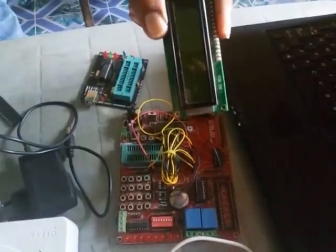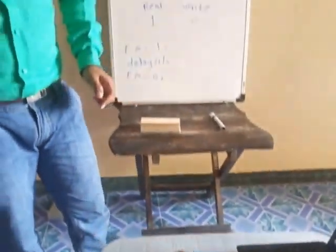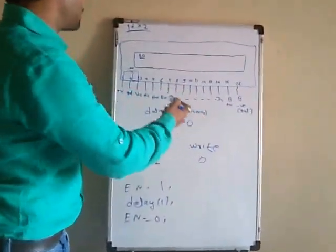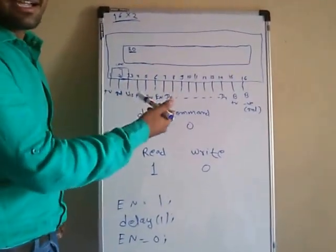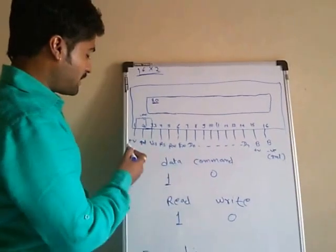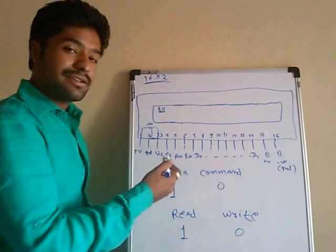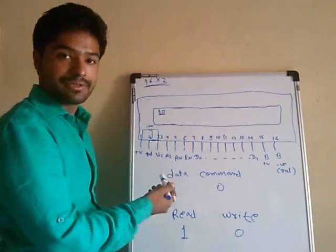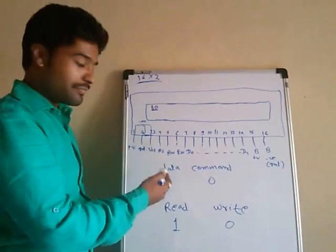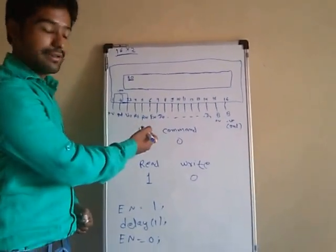Now we will see the basic pin configuration for the LCD. The 16x2 LCD is shown here on the board. It generally has 16 pins. The first pin is the power supply pin, the second pin is the ground pin, and the third pin is the VEE pin, which is generally used for brightness — we can set the brightness of the LCD using this pin.